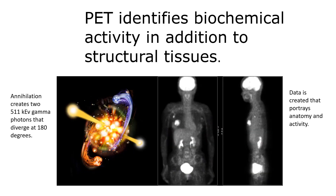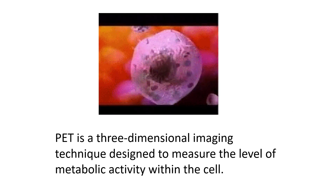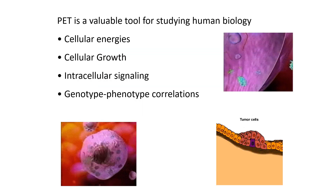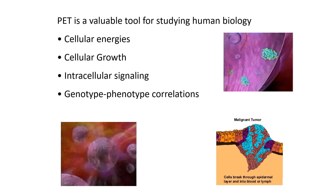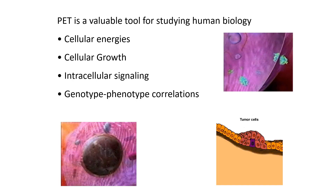Positron emission tomography identifies biochemical activity in addition to structural tissues. An annihilation creates two 511 keV gamma photons that diverge at 180 degrees. These are recorded and used to create anatomy and activity or physiology. PET is a three-dimensional imaging technique designed to measure the level of metabolic activities within a cell — a valuable nuclear medicine tool for studying human biology with gamma radiation. We can study cellular energies, cellular growth, intracellular signaling, and genotype-phenotype correlations.